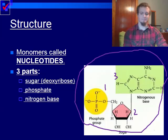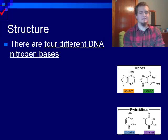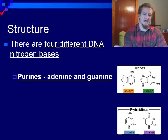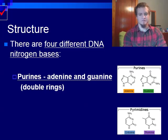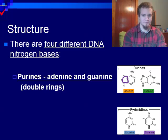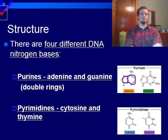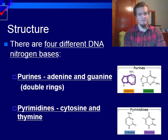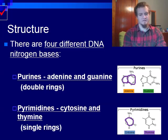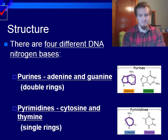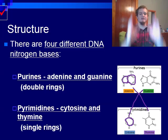Continuing with the structure of DNA: there are four different DNA nitrogen bases. We have the purines, which contain adenine and guanine — these are the double ring structures composed of two different carbon rings. We also have the pyrimidines, which include cytosine and thymine, and these are primarily single ring structures. This is important because we can't have bonds that are uneven — this is why purines always bond with pyrimidines, so that we have a nice, even width the entire way down.